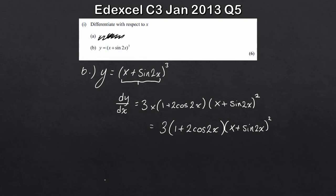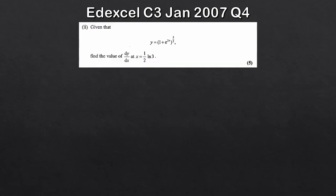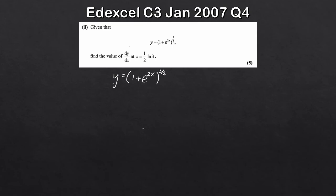That was from an old Edexcel C3 paper — about 3 marks each for those questions. Moving on to the last question: very similar to the second one. We're given y = (1 + e^(2x))^(3/2) and have to find the value of dy/dx at x = (1/2)ln 3.